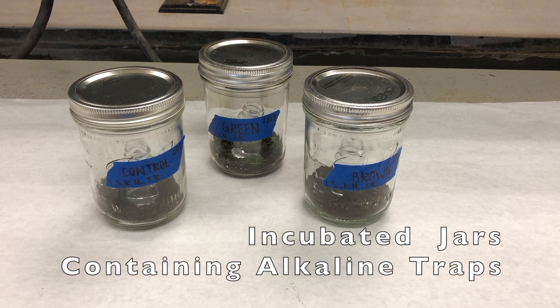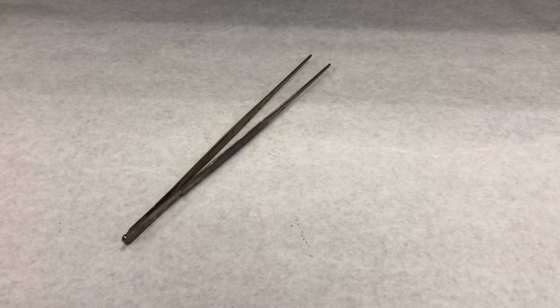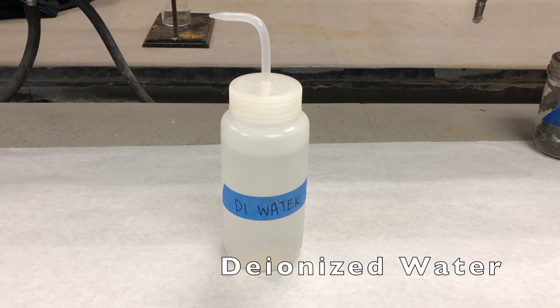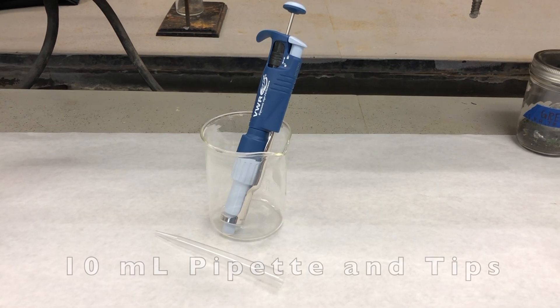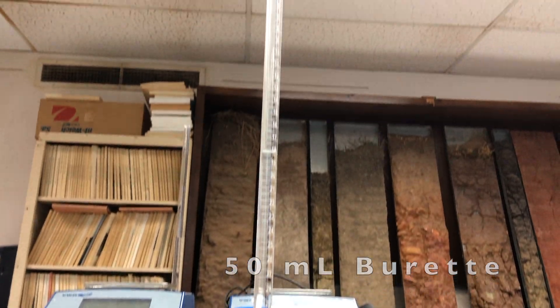To complete this portion of the alkaline trap method, you will need incubated canning jars with alkaline traps, long tweezers, three 250 milliliter Erlenmeyer flasks, deionized water in a laboratory wash bottle, a 10 milliliter pipette with tips, and a 50 milliliter burette on a stand.